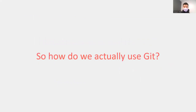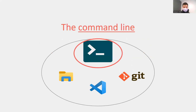We've now solved all three problems. So how do we actually use Git? We'll be using something called the command line — also called the terminal window.